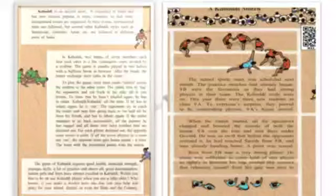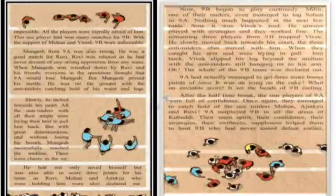Ravi from 9th B was a very, very strong player. He was alone sufficient to catch hold of any player so tightly between his legs. He used to hold the player raider and twist like scissors that releasing oneself from his grip was next to impossible. It was not at all possible to be leaving from his hands. So all the players were literally afraid of him. This player had won many matches for 9th B. So with the support of Mohan and Vinod, 9th B were an unbeatable team.